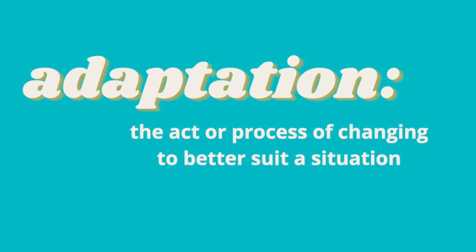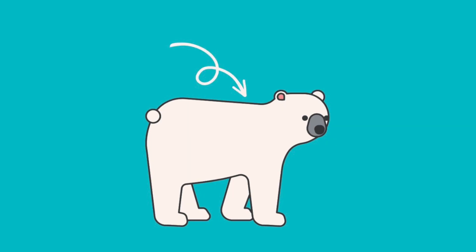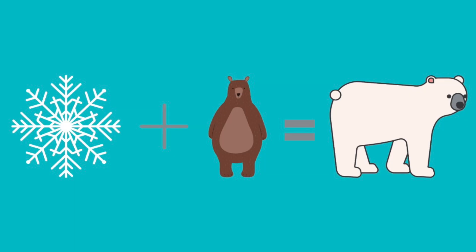Adaptation is the act or process of changing to better suit a situation. An adaptation can be physical or it can be behavioral. For example, a polar bear's fur is an example of a physical adaptation. My behavior has changed with Mr. Duff being around — I adapt by avoiding him as much as possible.